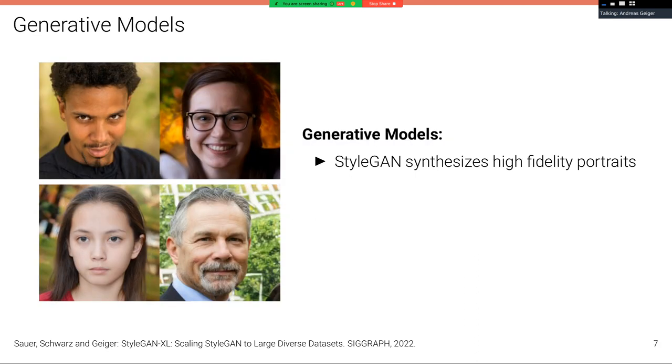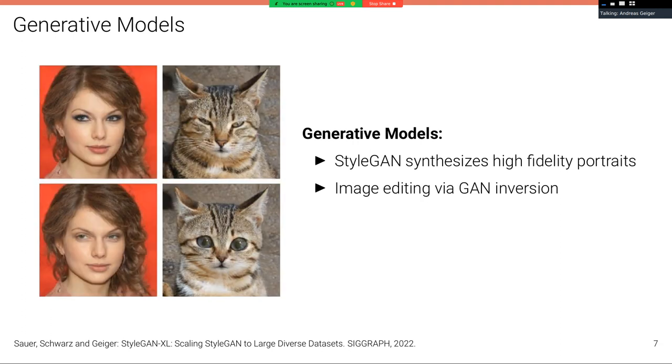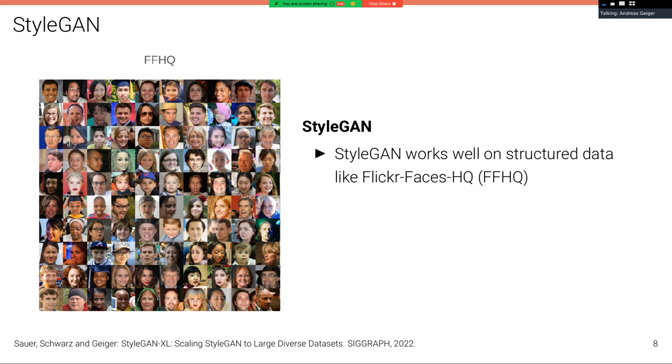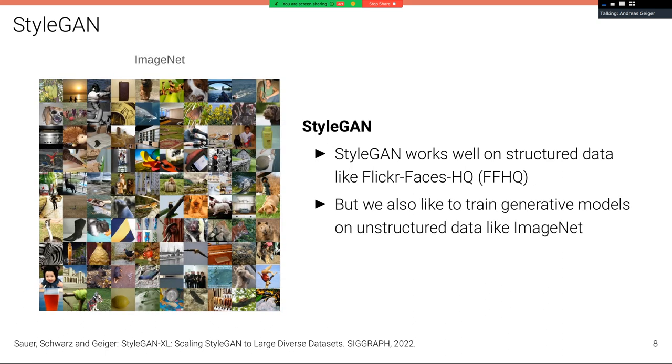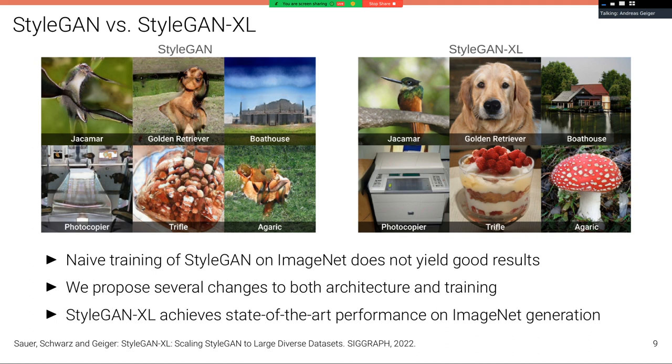We know that generative models for images have progressed substantially over the last five years. In particular, StyleGAN is able to synthesize high-fidelity portraits, such as shown here on the left. Via image editing techniques such as GAN inversion, we can also use these models effectively as a graphics engine from a data-centric perspective. Here are some examples where the expression of the face or the eyes have been altered. While StyleGAN works well on structured data such as faces, it really struggles with unstructured data like ImageNet with its 1,000 categories. And even within a single class there's much more variation in ImageNet compared to the class of faces. But we also want to learn generative models on unstructured data like ImageNet, and that's the goal of StyleGAN-XL.